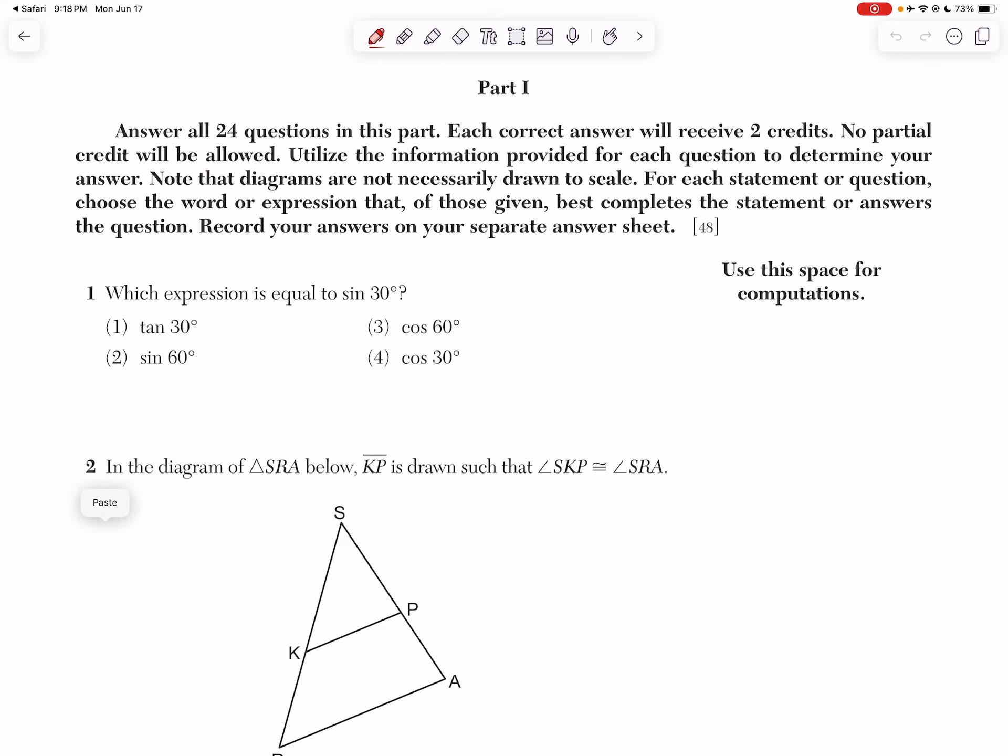All right, let's look at question number one. Which expression is equal to the sine of 30? So there's two ways to do this. The first way is just typing each of your answer choices into the calculator.